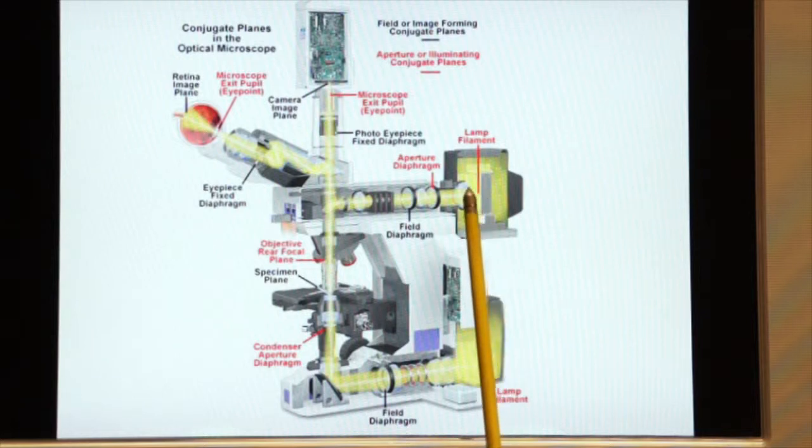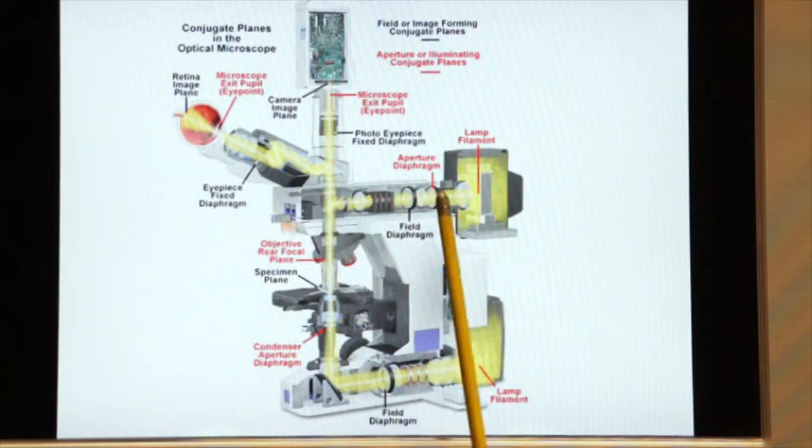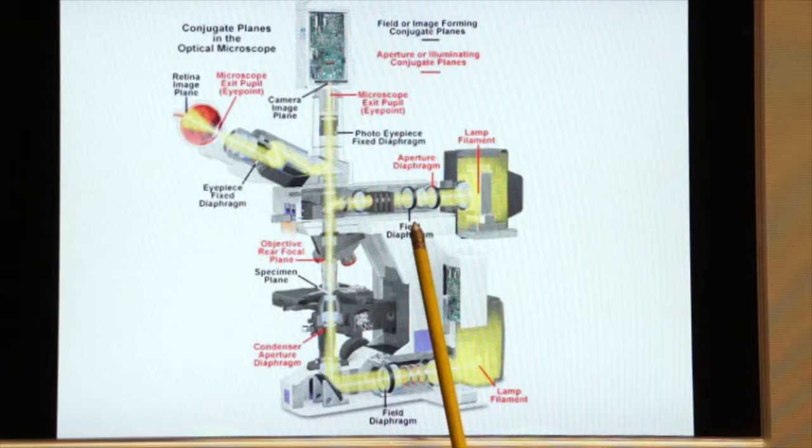Here you can see it traveling through a field diaphragm. Again, we can close this diaphragm down and align it for alignment purposes. The light then travels through what we call a barrier filter, an excitation filter that produces the light, that blue light that you saw in the microscope, to excite our specimen.